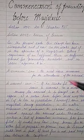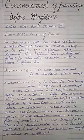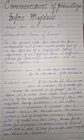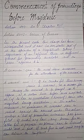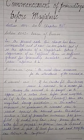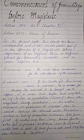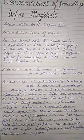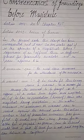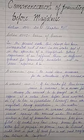Two important cases to note here: first, Adalet Prashad vs. Roop Lal Jindal, in which it was held that the order by the magistrate cannot be reconsidered or re-appealed. Second, Nupur Talwar vs. CBI 2012, in which it was held that the magistrate does not need to mention detailed orders — each and every detail need not be mentioned.